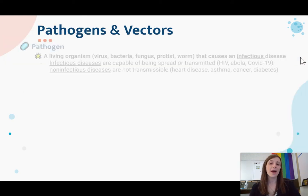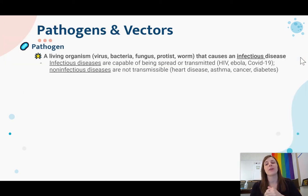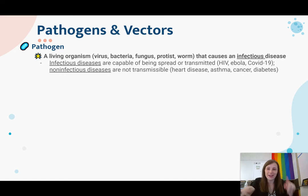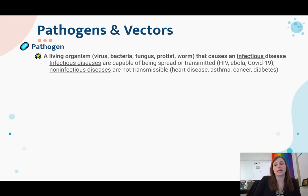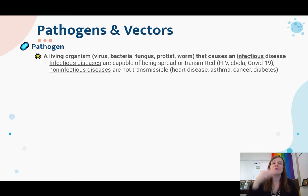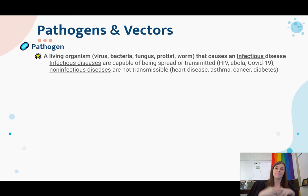We're going to start with talking about pathogens versus vectors. A pathogen — I gave you the little bacteria icon there — is a living organism: a virus, a bacteria, a fungus, a protist, a worm that causes an infectious disease.